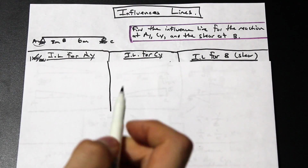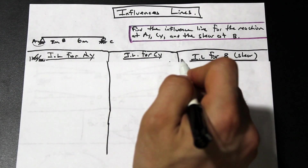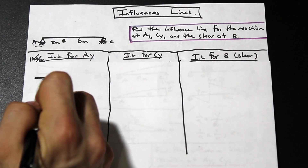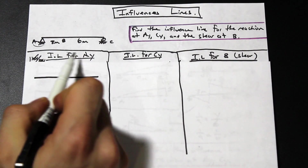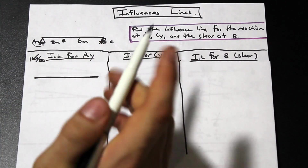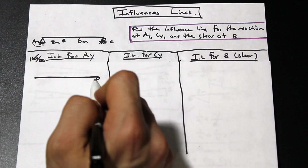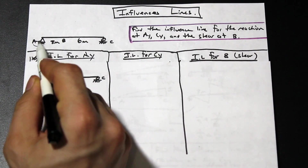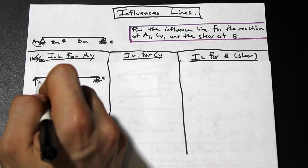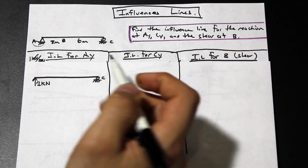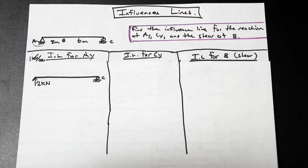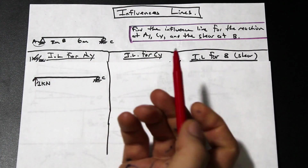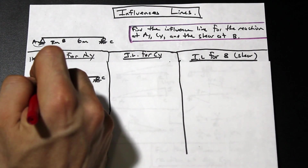We're going to look at AY first. Drawing the beam, when we want to find the influence line for AY, we release the beam at A. We replace the pin support with a one kilonewton force, then we look at the deflected shape of the released beam. If we remove the support and push upward, the beam would deflect up like this.